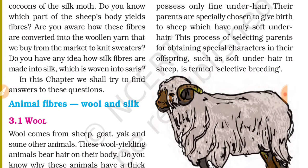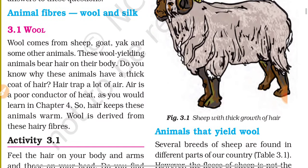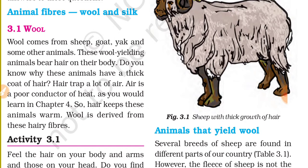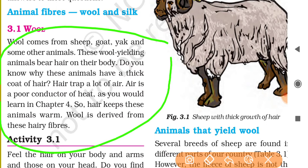First, let us read about animal fibers — wool and silk. Wool comes from sheep, goat, yak, and some other animals. These wool-yielding animals bear hair on their body. Do you know why? Their hair traps a lot of air. Air is a poor conductor of heat, as you will learn in Chapter 4, so the hair keeps these animals warm. Wool is derived from these hairy fibers.